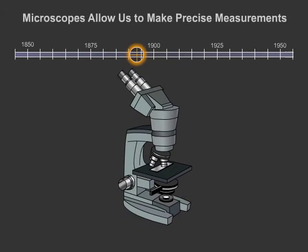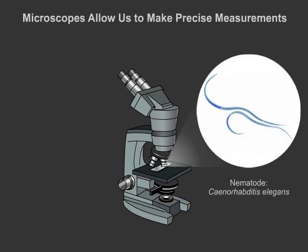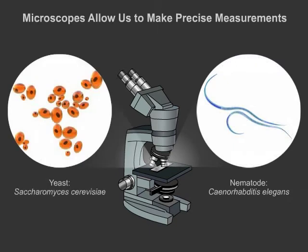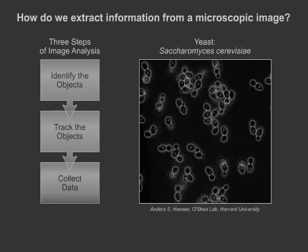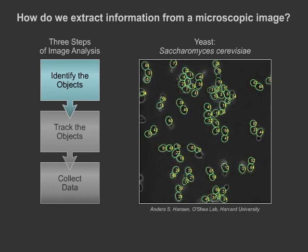In 1893, the modern microscope was invented, allowing us to observe and measure characteristics of cells and microscopic organisms precisely, such as the C. elegans and the yeast cell Saccharomyces cerevisiae. So how do we actually start with a microscope image like this and extract information? In this example, we are looking at an image from a movie of individual yeast cells. Image analysis consists of three steps. We first identify the objects — here, we can identify the boundary of cells with an algorithm we will discuss later.